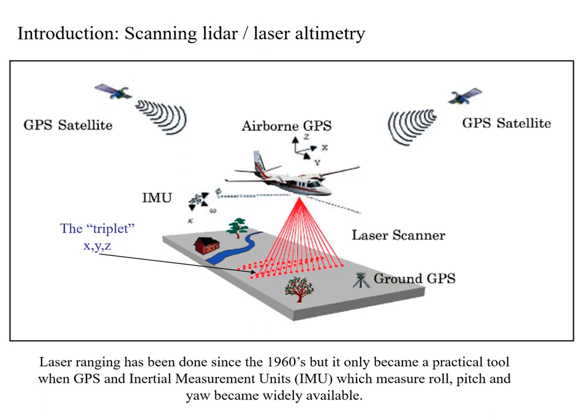The basic laser ranging method has been done since the 1960s, but it only became a practical tool in the 90s and truly practical in the 2000s, because suddenly two things became available. First, GPS, so you can know where your plane is in three dimensions. Second, an inertial measurement unit or inertial navigation system, which allows you to know which way your plane is pointed — roll, pitch, and yaw. If you know where you are and where your plane is pointing, you know where the laser is pointing, and combining that with the range gives you an x, y, and z coordinate on the surface of the Earth — a triplet.